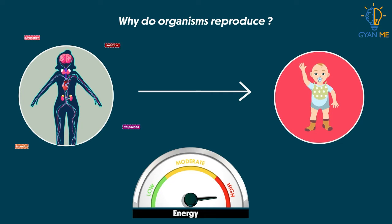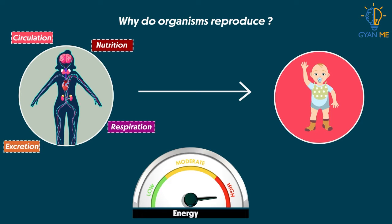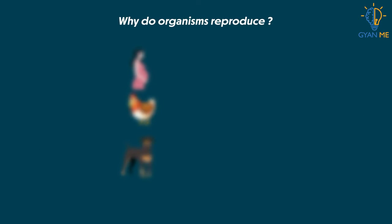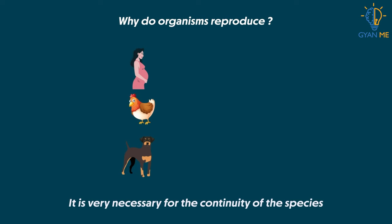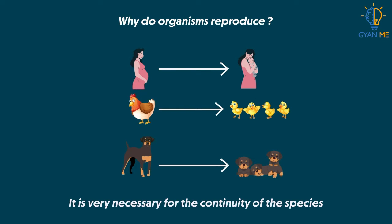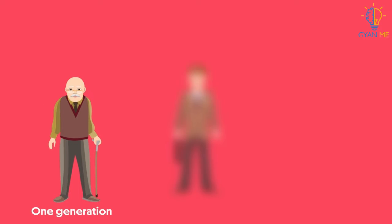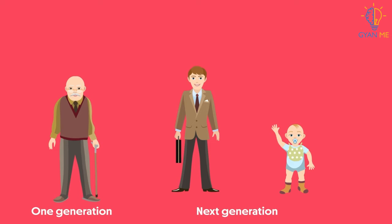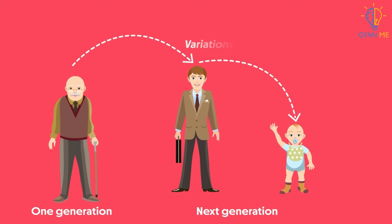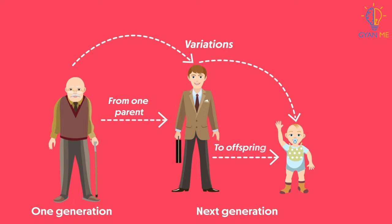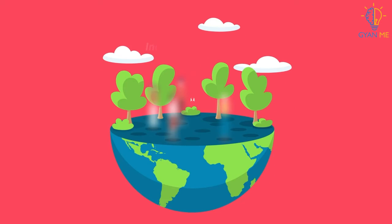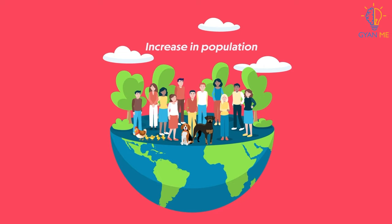So why should an individual organism spend so much energy on a process which is not needed to stay alive? The answer is: no doubt, reproduction is not essential for staying alive. But it is very essential to maintain the continuity of the species. Reproduction ensures that one generation of living organisms produces the next generation. It also plays an important role in evolution by transmitting variations from parents to offspring.